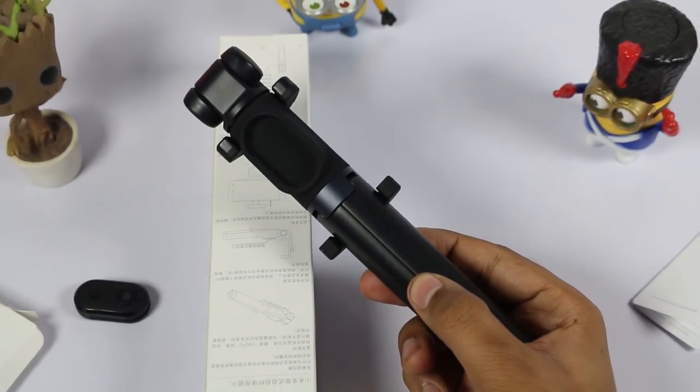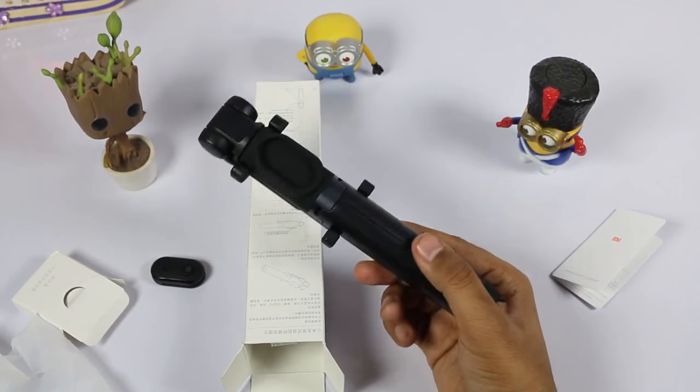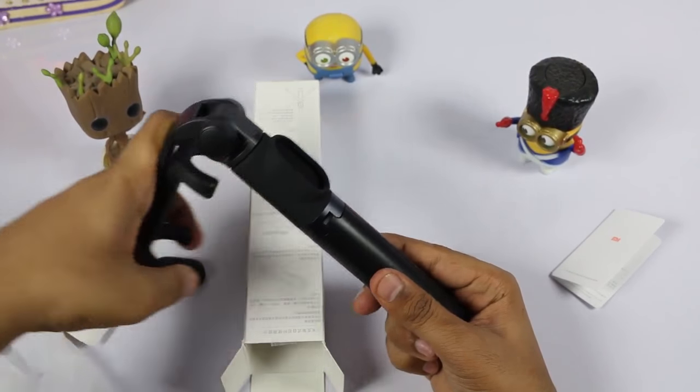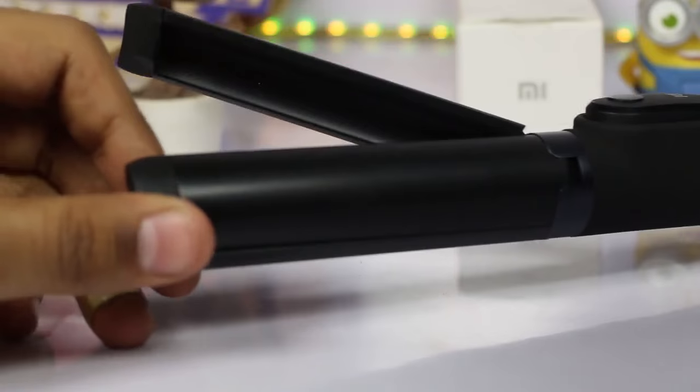We get a proper rubberized coating on top of the handle, as well as a proper place where the remote can sit easily with no wobble. We can open up the bottom portion into three legs, which makes it usable as a monopod or a table stand for video or conference calling.